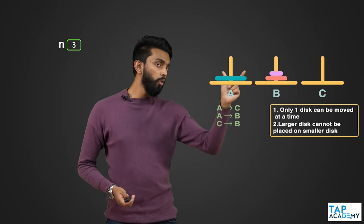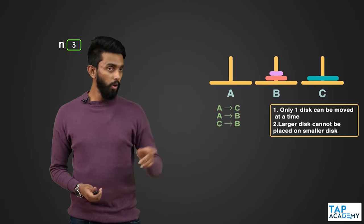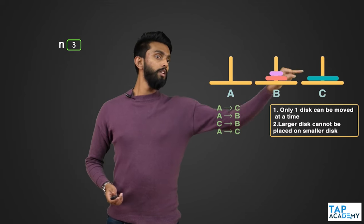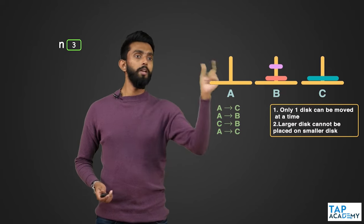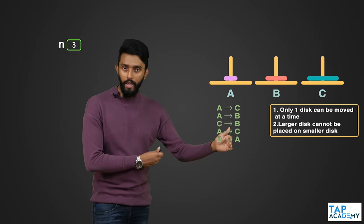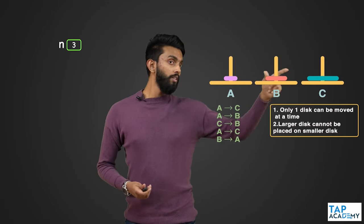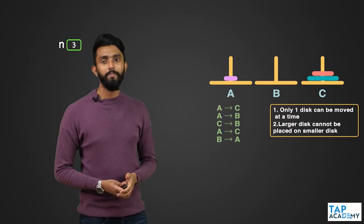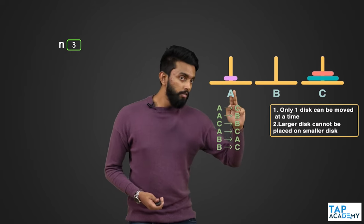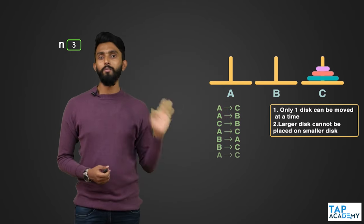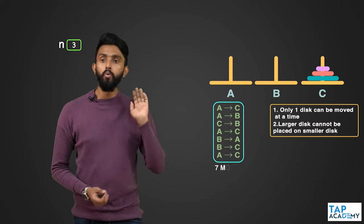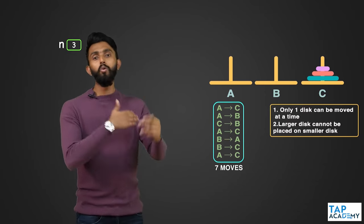Tower A is now free, so take the largest disc and place it at C — move A to C. Next, to place the remaining discs on C, move the small disc from B to A, then move B to C, and finally move A to C. That gives us a total of seven moves to complete the Tower of Hanoi with three discs.